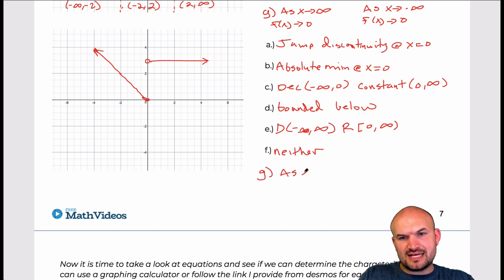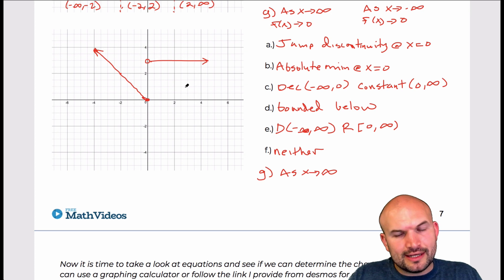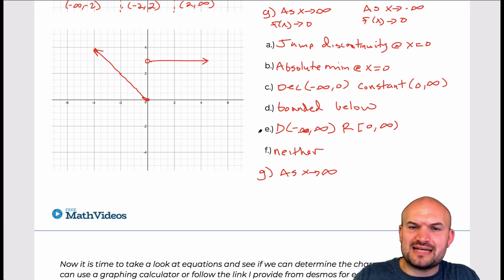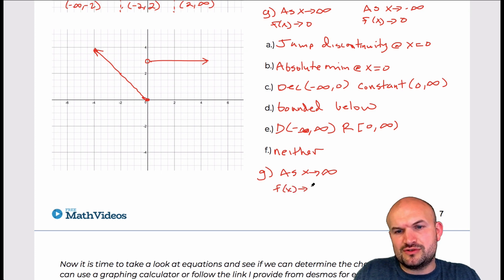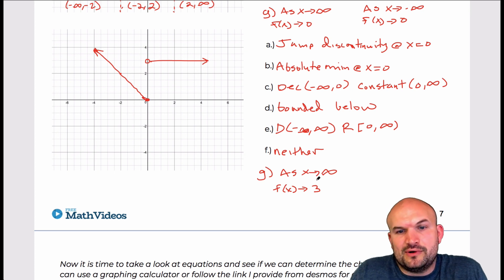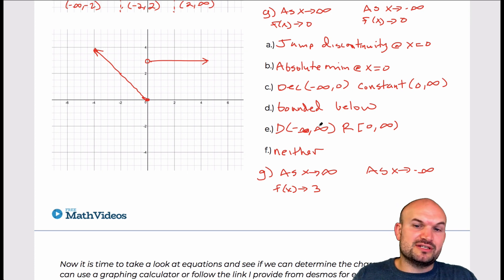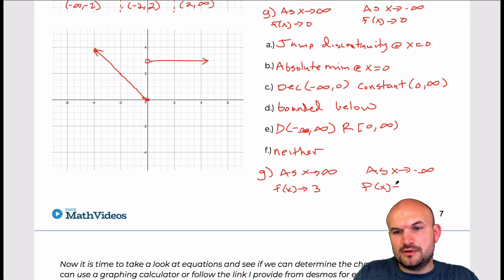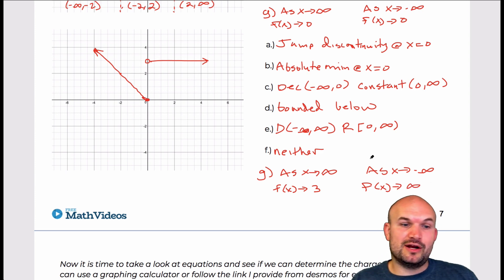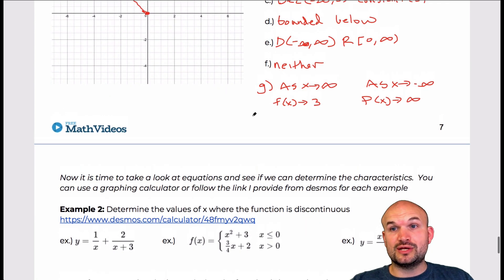For the end behavior: as x approaches infinity, you can see the graph is at the value of 3 and continuing, so f(x) approaches 3. As x approaches negative infinity, you can see the graph is going up, so f(x) approaches infinity. And that's it for these graph examples — next we'll get into looking at the equations.